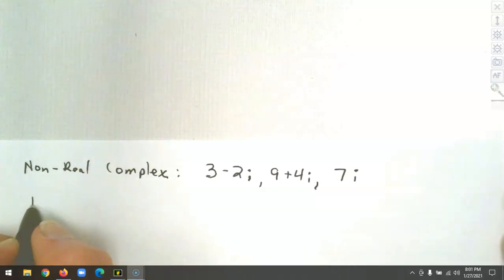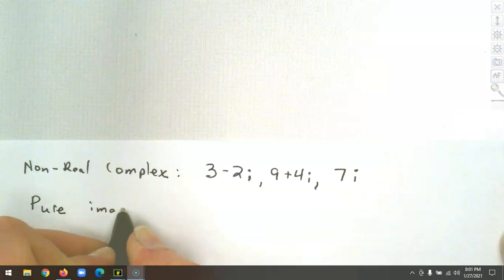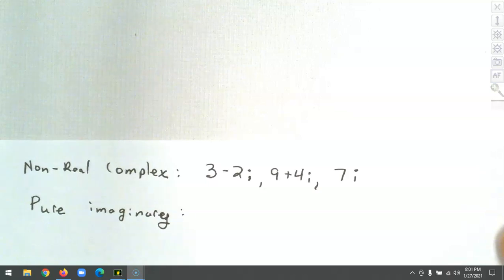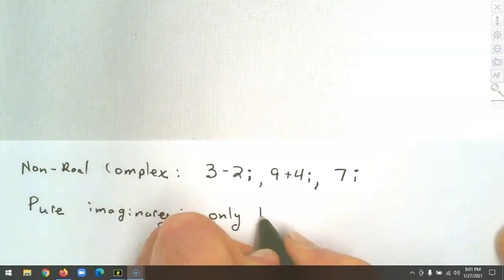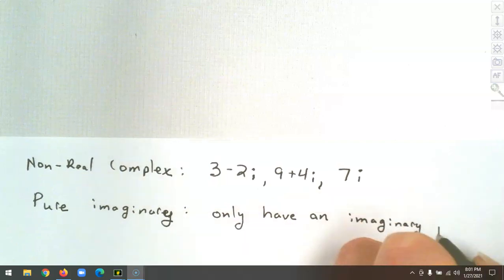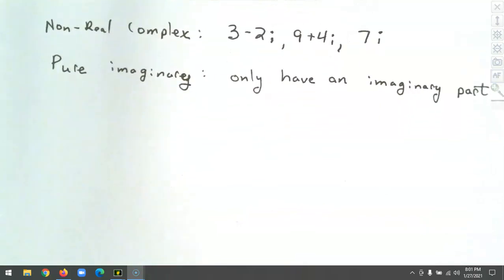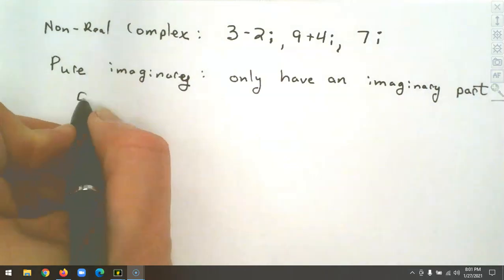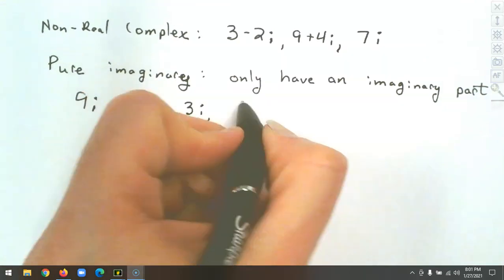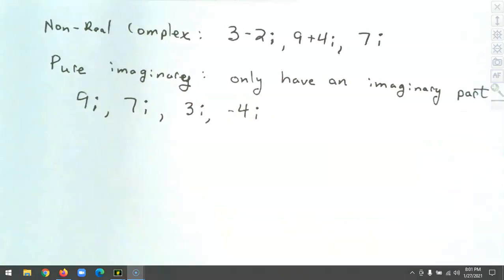Pure imaginary numbers only have an imaginary part — no real part. Examples include 9i, 7i, 3i, and negative 4i. Those are all pure imaginary. Now we're going to classify some numbers. When we classify them, they can belong to more than one type.